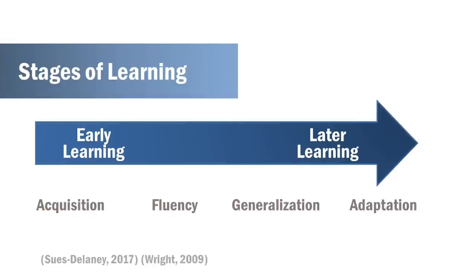We can think of it as the stages of learning. We would start with acquiring the skill initially — you may not always be accurate and movement might be slower — but then with fluency you're becoming more proficient and achieving the skill without direction and instruction. Finally, generalizing and adapting is continuously learning to apply the skill in novel situations.